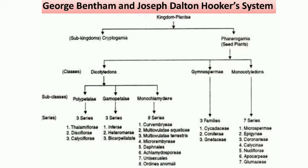Monochlamydae usually refers to flowers having a perianth. Sub-class Polypetalae has three series: Thalamiflorae, Disciflorae, and Calyciflorae. Gamopetalae has three series: Inferae, Heteromerae, and Bicarpellatae.